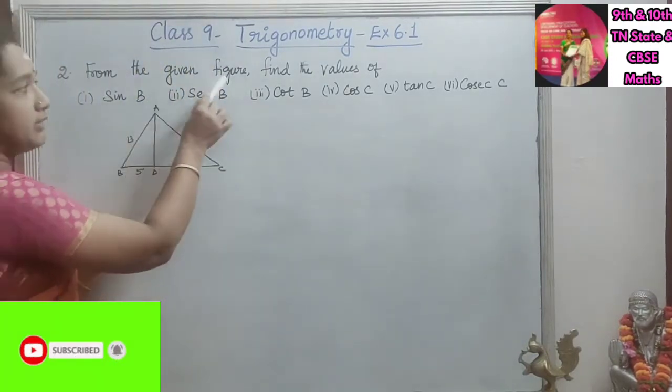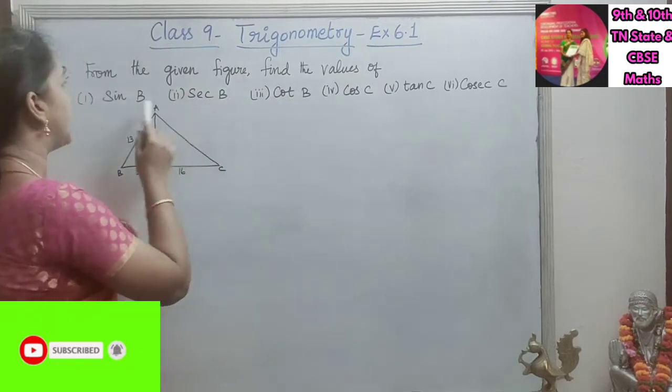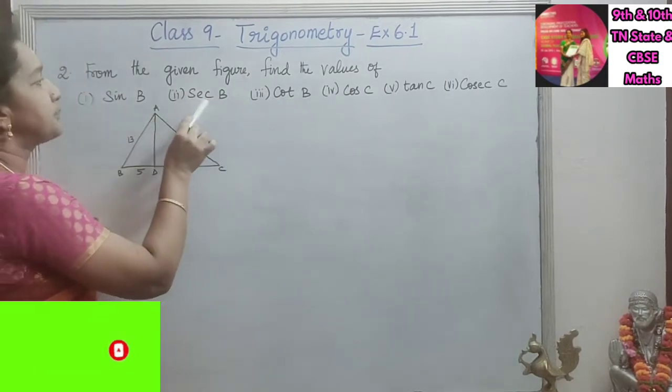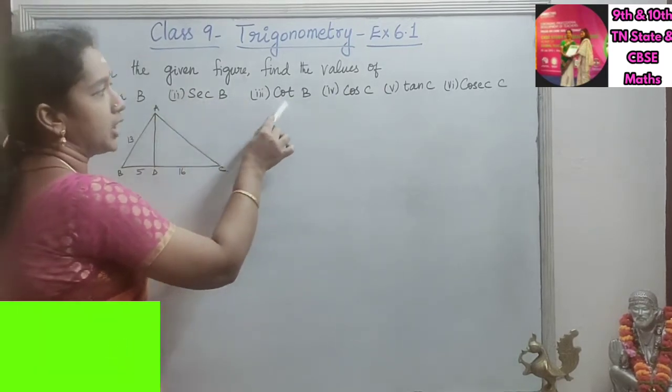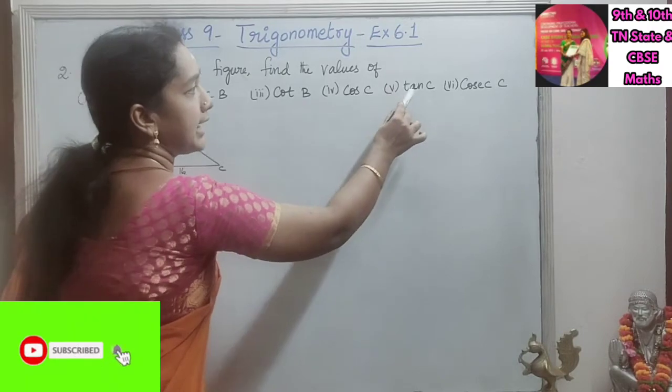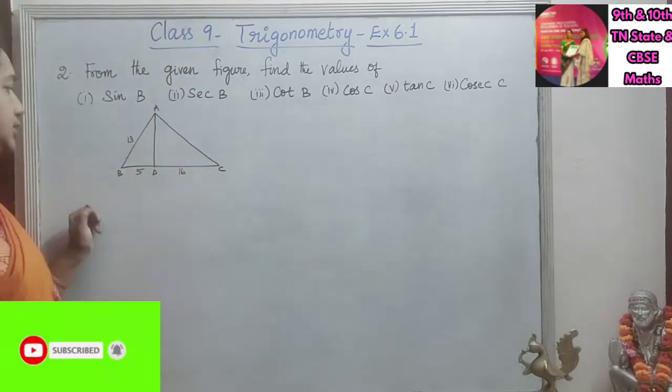From the given figure, find the values of sin B, secant B, cot B, cos C, tan C, and cosecant C.